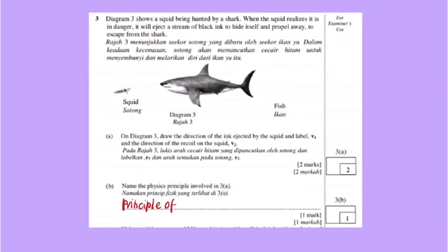Let's answer a question together. The diagram shows a squid being hunted by a shark. When the squid realizes it is in danger, it ejects a stream of black ink to hide itself and propels away to escape. The first question asks us to draw the direction of the ink ejected by the squid and label it v1, and label the recoil direction on the squid as v2. Key words here are 'eject' and 'recoil,' showing this is an example of explosion. Since the squid propels away, its direction is v2, and the ink must be ejected in the opposite direction as v1.